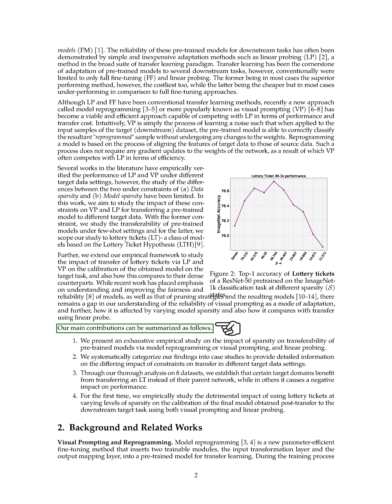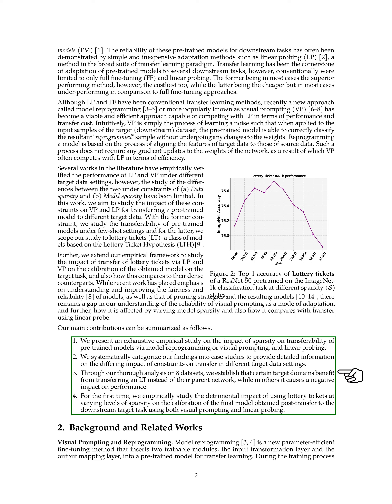Our main contributions in this paper are as follows. First, we provide a comprehensive empirical study on the impact of sparsity on the transferability of pre-trained models using visual prompting and linear probing. Second, we organize our findings into case studies to provide detailed information on how different constraints affect transfer in different target data settings. Third, through our analysis of eight datasets, we show that certain target domains benefit from transferring a lottery ticket instead of their parent network, while in others it has a negative impact on performance. Fourth, for the first time, we study the negative impact of using lottery tickets at varying levels of sparsity on the calibration of the final model obtained after transfer to the downstream target task using both visual prompting and linear probing.